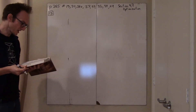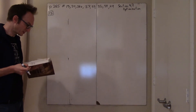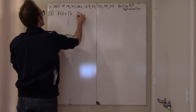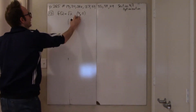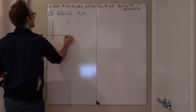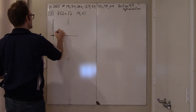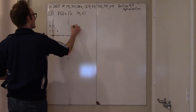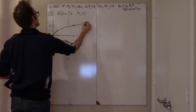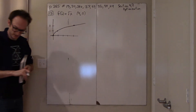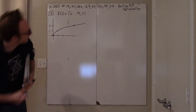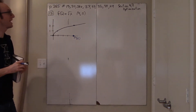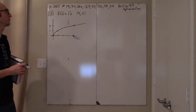Number 13 says: find the point on the graph of the function that is closest to the given point. The function is f(x) = √x and the point is (4, 0). So I have the square root function, and by the time I get to x=2, I'm up at y=2, so (4, 2) would be on the curve. There's some point (4, 0), and the question is which point on √x is closest to (4, 0).